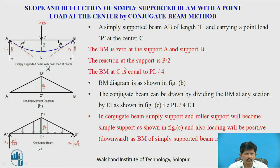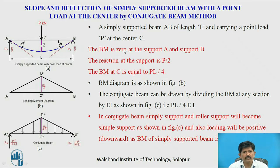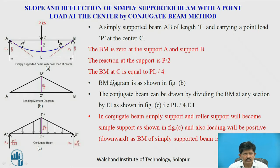Now we will find the slope and deflection of a simply supported beam AB having load P at the center, that is L by 2 from A and L by 2 from B. The bending moment will be zero at supports A and B. The reaction at each support will be P by 2 due to symmetric loading. The bending moment at C will be P by 2 into L by 2, that is PL by 4. The conjugate beam is drawn by dividing the bending moment at any section by EI.